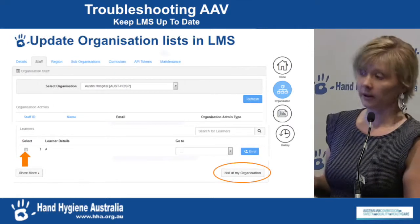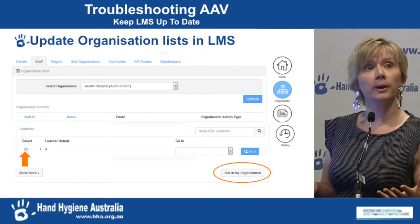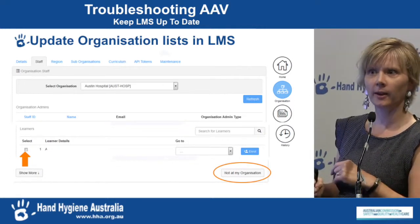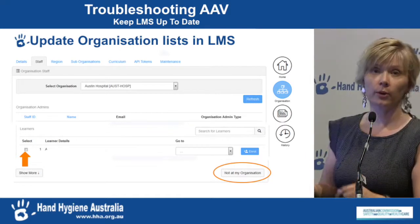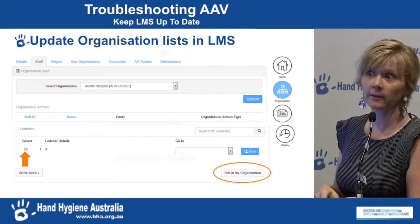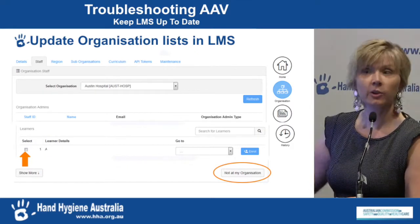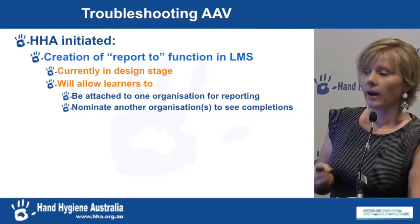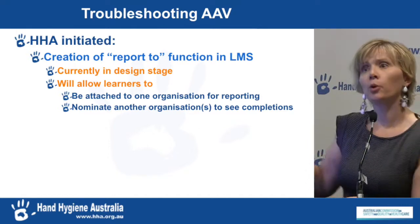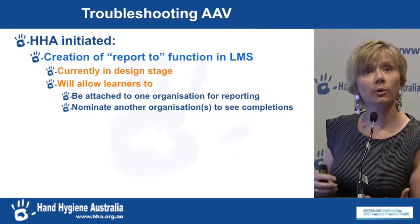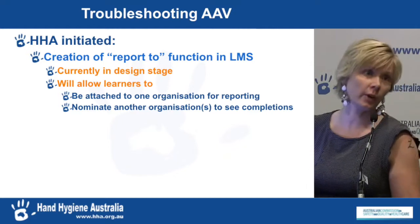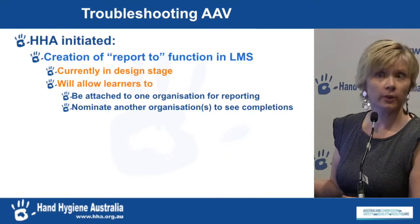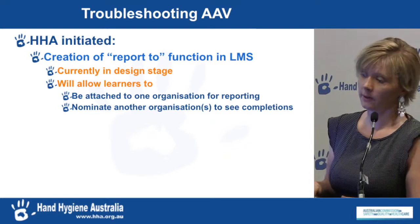You can also update the organisation list in the LMS. If you're an org admin and there are people attached to your organisation who aren't actually yours, you can use the checkbox and select 'not at my organisation' to remove them from your site in the LMS — this will automatically send them an email to say they've been removed and need to press the change organisation button. We've also initiated creation of a 'report to' function in the LMS where you can be attached to one organisation but send your report to another, currently in the design stage, to allow learners to report to multiple organisations.